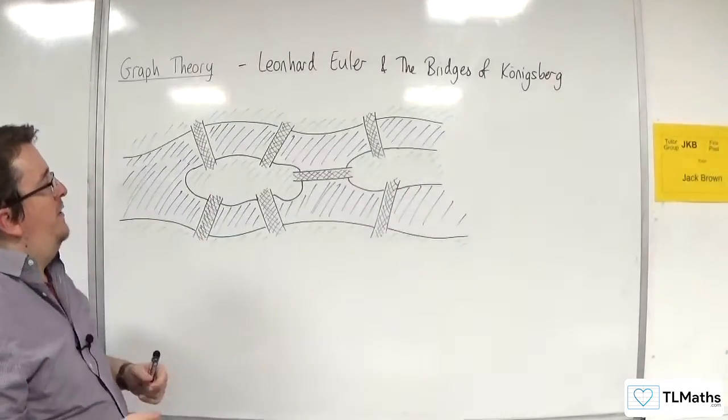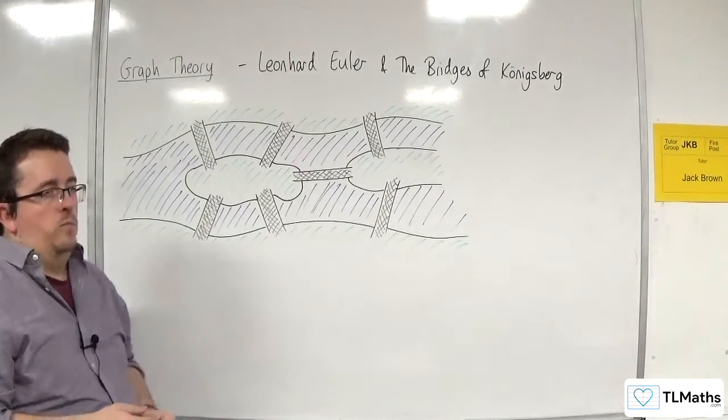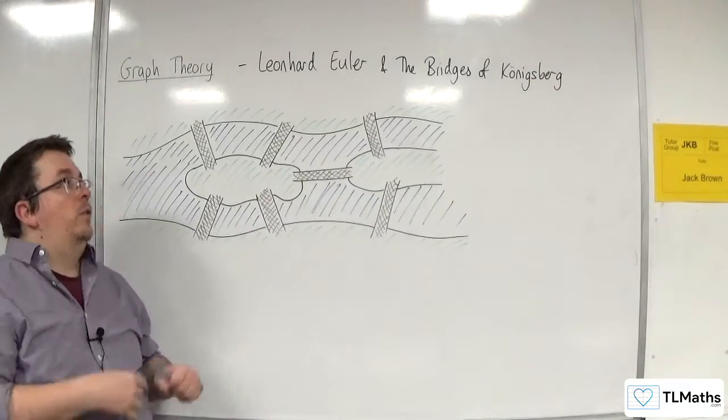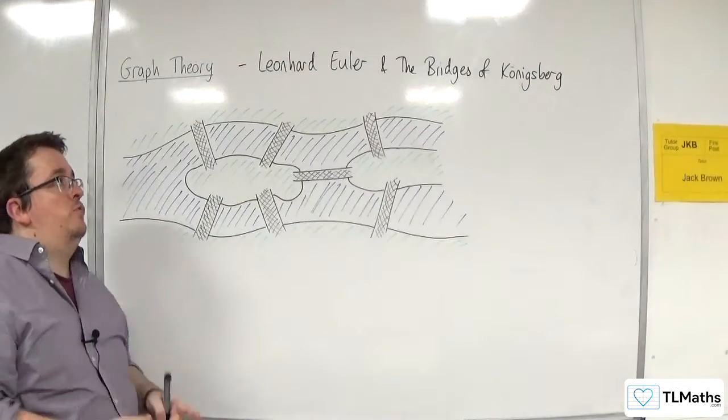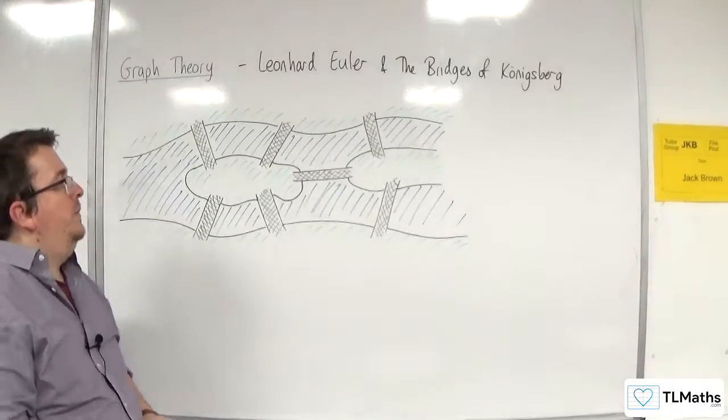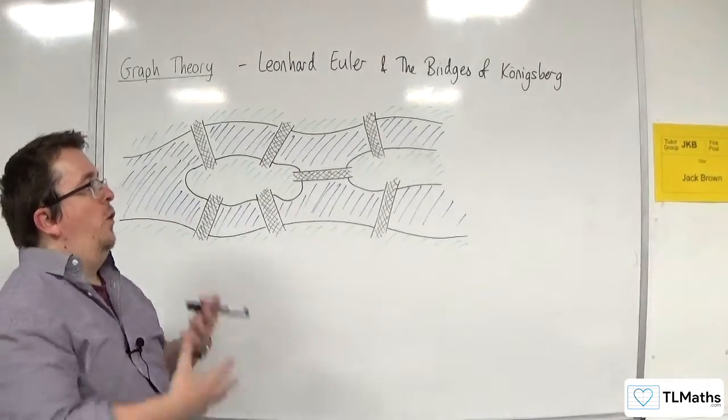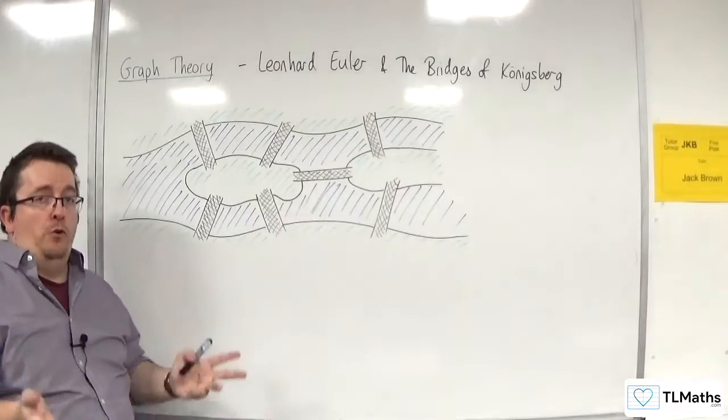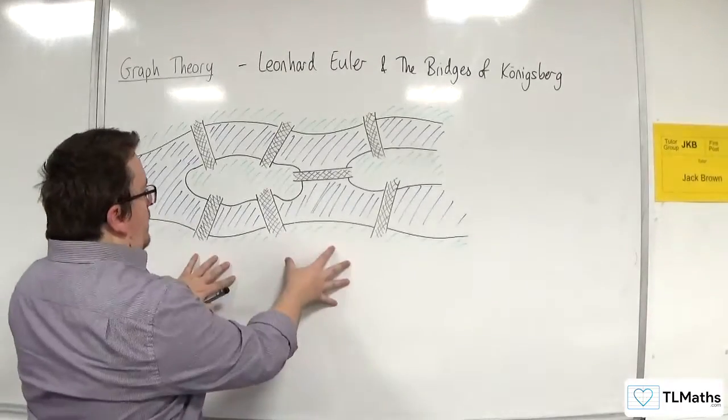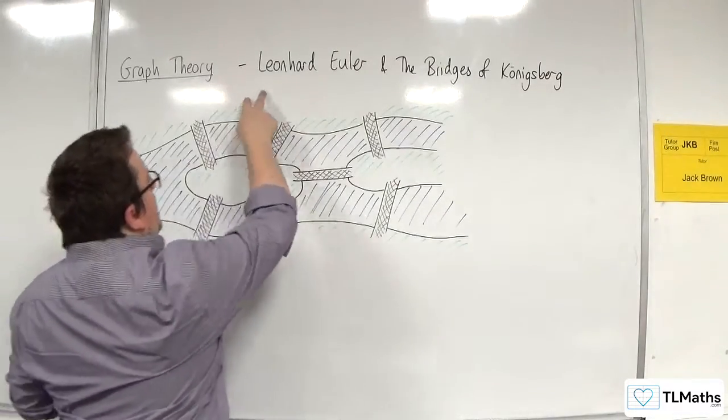And joining up these land masses are seven bridges. Otherwise, and this is often referred to as the seven bridges of Königsberg. Now, the competition was that you could start on any one of the four land masses. So we've got one, two, three, four.